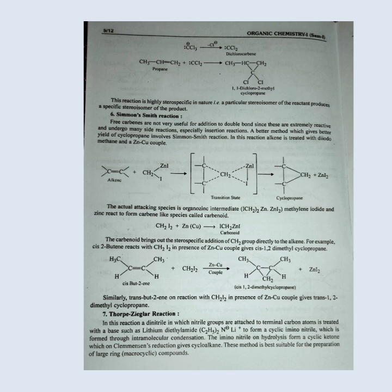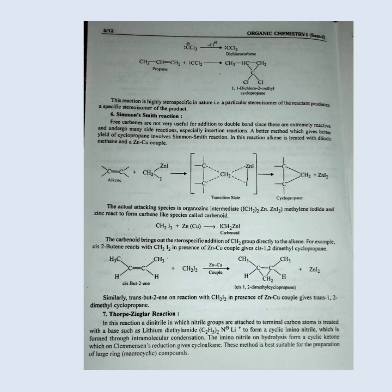Thorpe-Ziegler reaction: In this reaction, a dinitrile in which the nitrile groups are attached to terminal carbon atoms is treated with a base, such as lithium diethylamide, to form a cyclic iminonitrile through intramolecular condensation. The iminonitrile on hydrolysis forms a cyclic ketone which, on Clemmensen reduction, gives a cycloalkane. This method is best suitable for the preparation of large ring compounds.